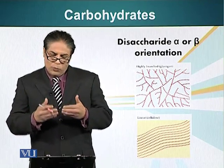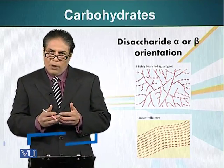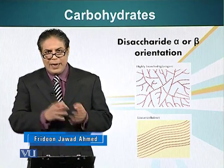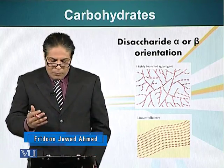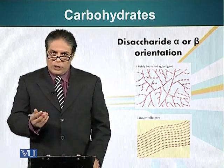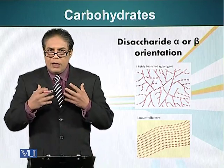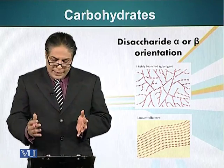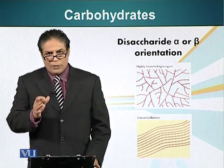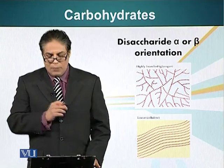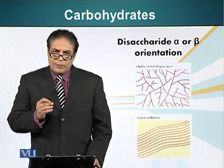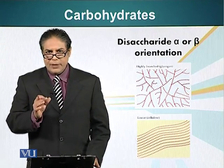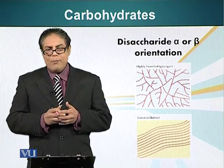When two glucose molecules in alpha configuration form a bond, they have a very different chemistry than when a bond is formed between a beta and an alpha glucose. For example, starch or glycogen — molecules which animals and plants use to store glucose — have glucose molecules linked in alpha configuration. Whereas cellulose, a material present in wood, has glucose molecules linked in beta bond.